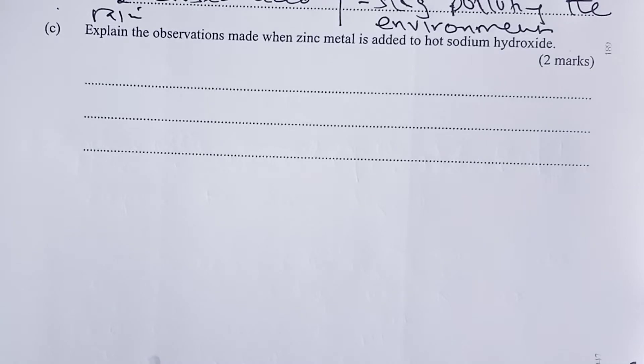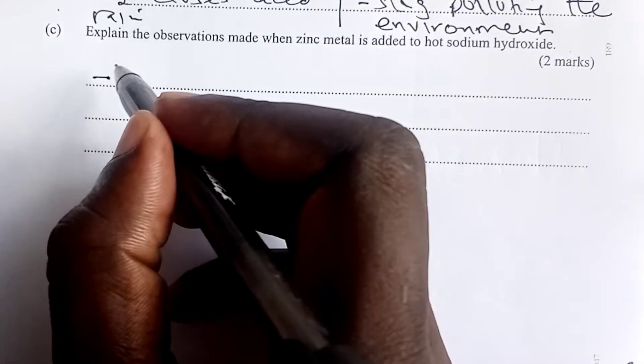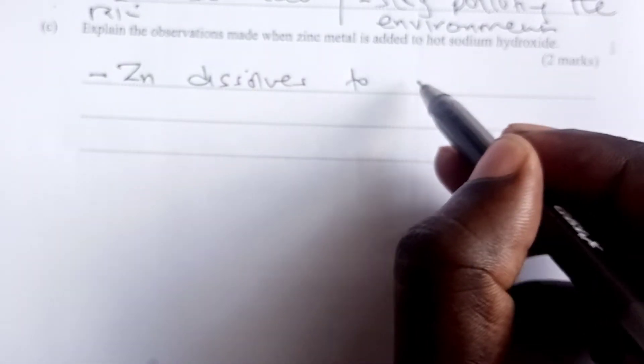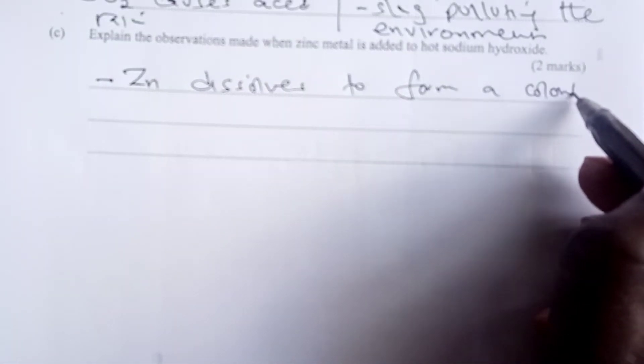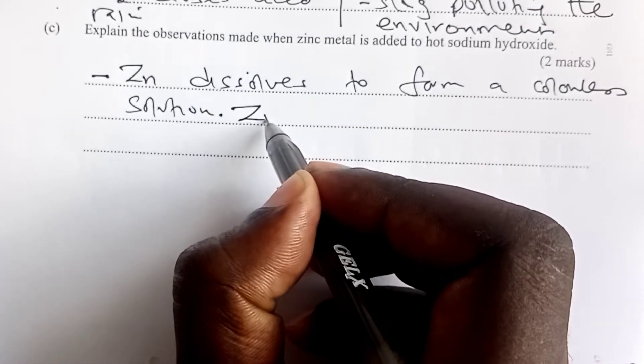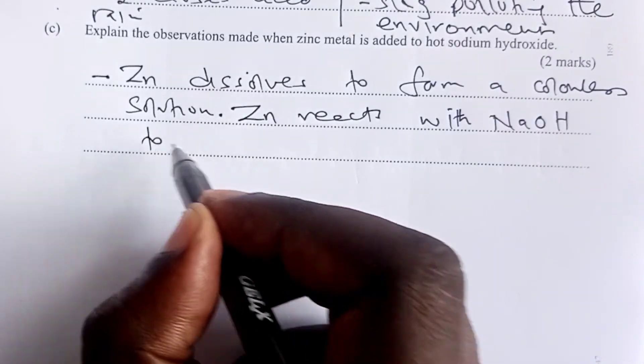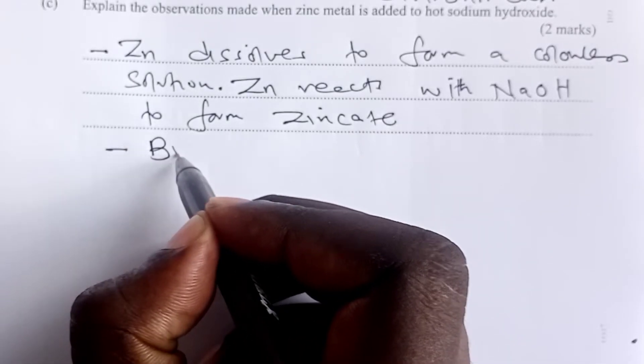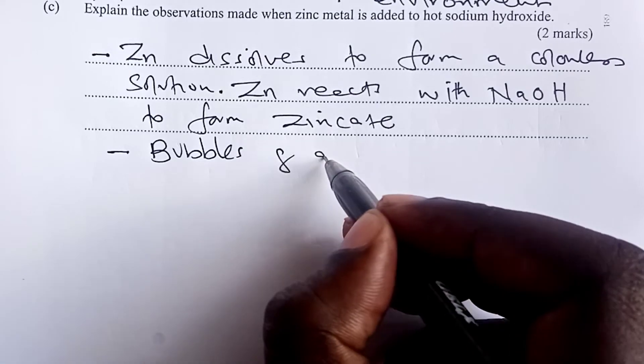Lastly, we were told to explain the observations made when zinc metal is added to hot sodium hydroxide. One of the observations would be that zinc dissolves to form a colorless solution. Why is this so? This is so because zinc reacts with sodium hydroxide to form what we call zincate. So that is one of the observations that you make when you put zinc in hot alkali.